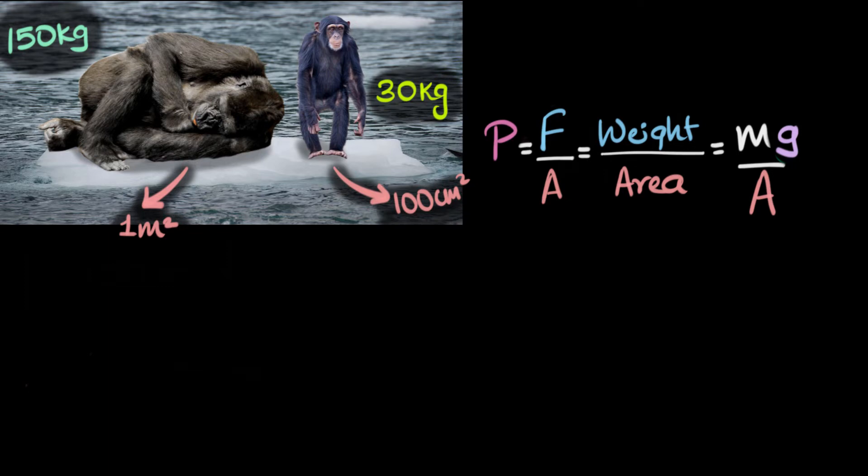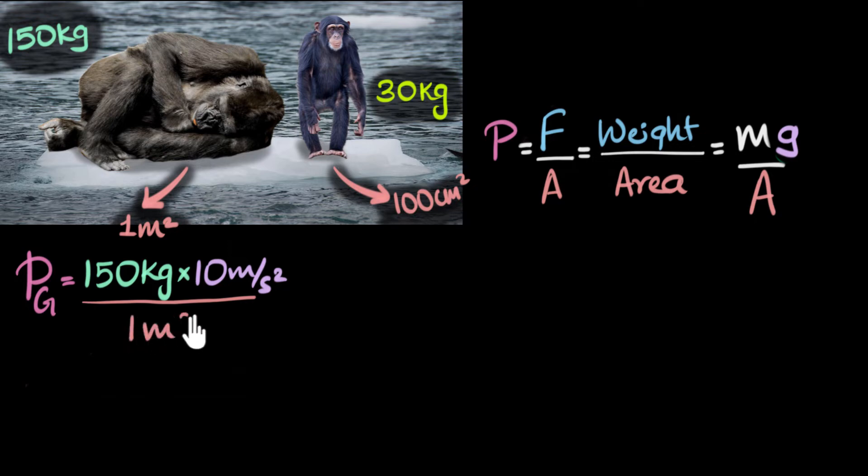So let's first do the pressure due to the gorilla on the ice, Pg for gorilla. It's going to be the mass of that gorilla, that is 150 kilograms, times g, which we are assuming to be 10, 10 meters per second squared, divided by the area of contact. The area of contact over here is one meter squared. Okay? What's that going to be? Well, let's write that down here.